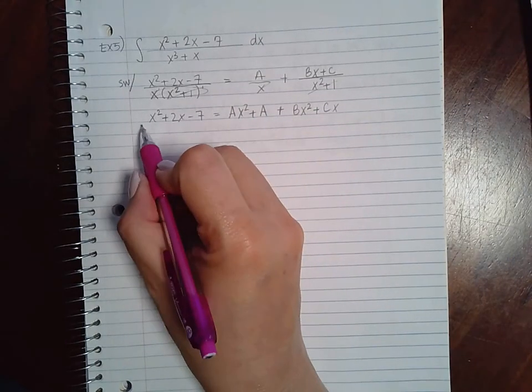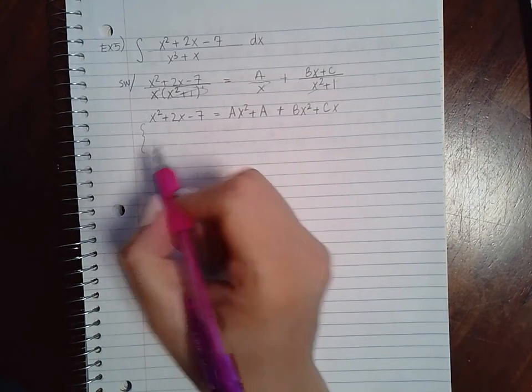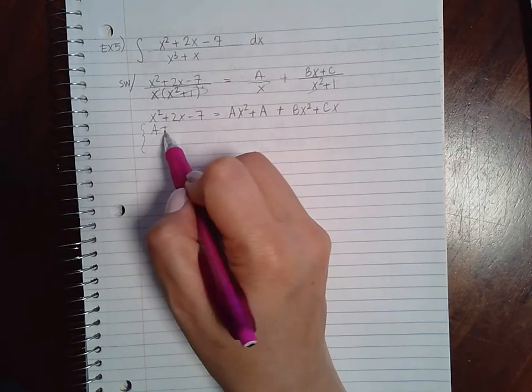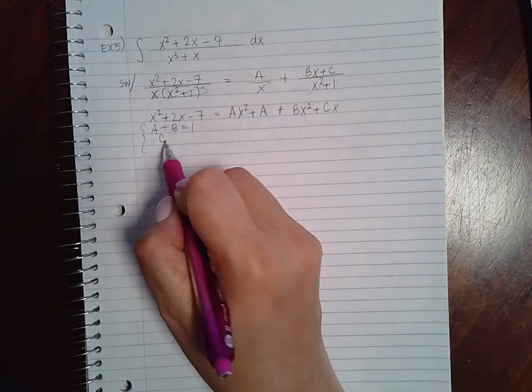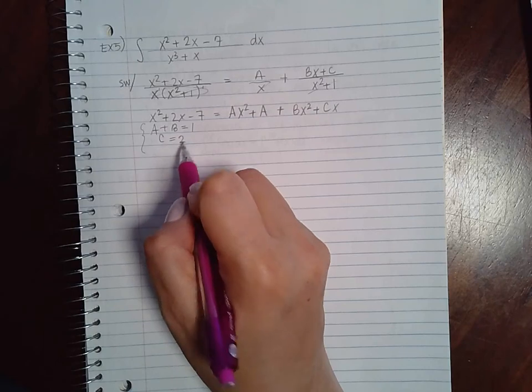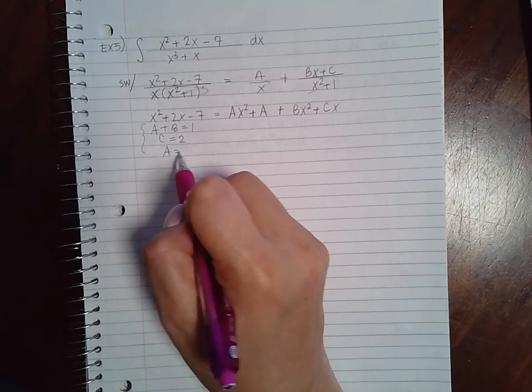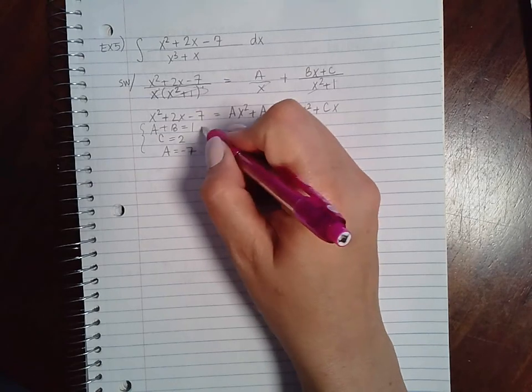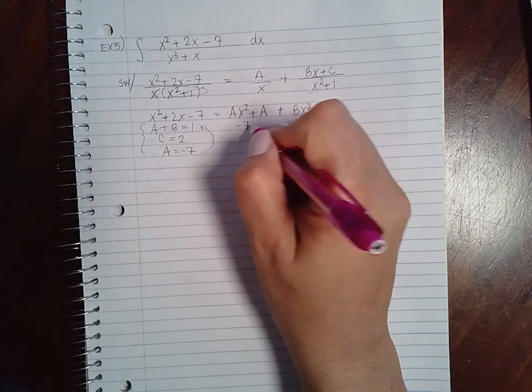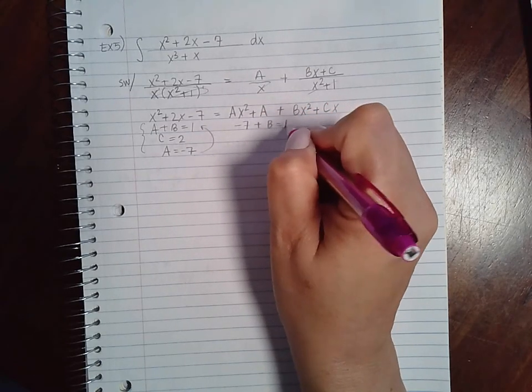Now if I set up my systems of equations, I end up with A plus B equal to 1, I end up with C equal to 2, and I end up with A equal to negative 7. So I already have A and C, but if I plug this back in here I can figure out what B is, and B is 8.